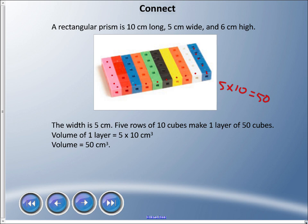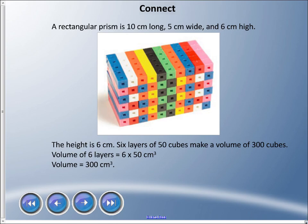There is the final prism there, and we have a height of 6 centimeters. We have 6 layers of those 50 cubes we had before to make a volume of 300 cubes altogether. We've already talked about that direction, we've already talked about this direction, now we need to go up and there's one, two, three, four, five, six of those layers. If we do 6 times the 50 we had before, 6 times 50 is 300. So that's a volume of 300 centimeters cubed.